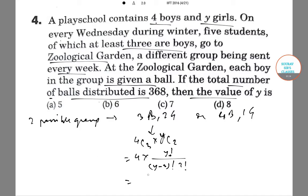Now, 4 by 2 factorial gives us 2 and y factorial by (y minus 2) factorial gives us y into (y minus 1). So with this group, three balls are given to three boys.